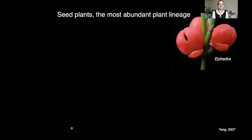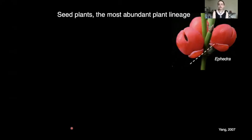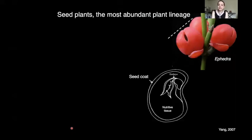It is not a secret that the seed is one of the most important evolutionary novelties in land plant evolution, as it has allowed them to colonize very different environments. Seed plants are the most abundant plant lineage on Earth. Here on the right we have an example of a seed, and if we make a longitudinal section through that seed, we would see the three main tissues: the protective layer, which is the seed coat, the embryo, and the nutritive tissue, which is going to nourish that embryo.